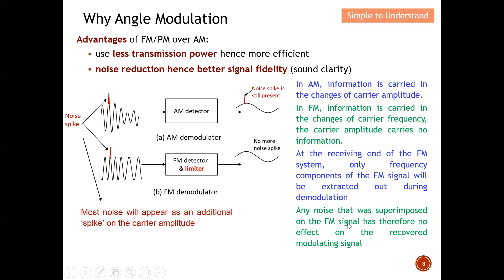You can see that for AM, noise couples onto the amplitude of the signal, and at the AM detector end the noise is still present. But for frequency modulation, when noise couples onto the modulated signal, there is no more noise at the output because we decode the modulating signal based on frequency, not amplitude. This is one of the biggest advantages of FM or PM over AM, and the reason why FM has taken over amplitude modulation.